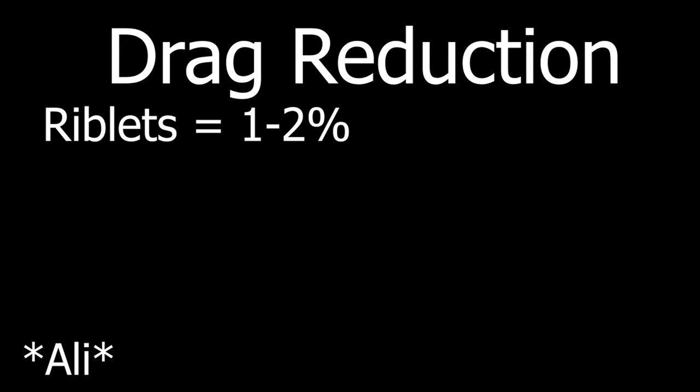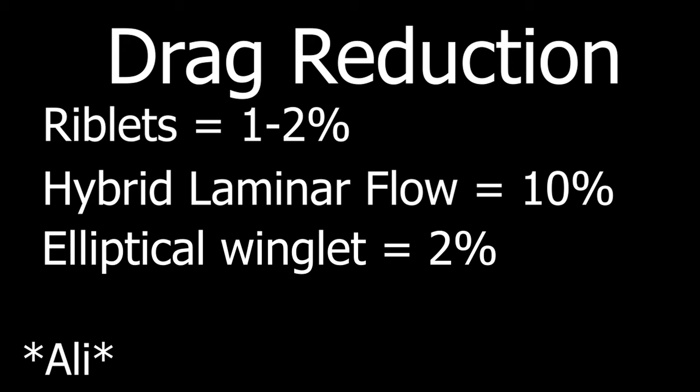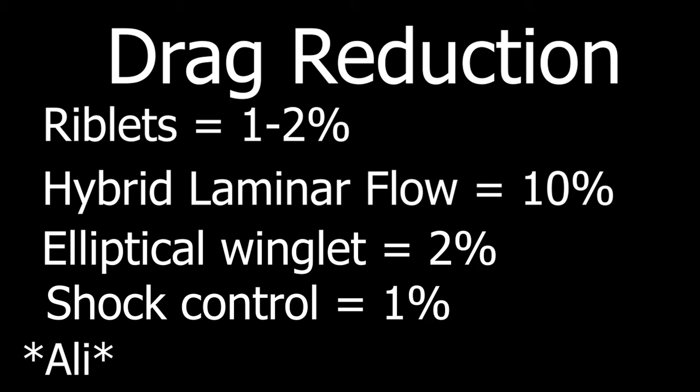High efficiency is achieved by reducing the magnitude of drag, because the less drag there is, the less fuel is needed to fly. Different concepts have been presented as potential ways to reduce drag: turbulent skin friction drag reduction using riblets, hybrid laminar flow technology, innovative wing tip devices such as winglets with an inclination of 60 degrees, and shock control and trailing edge devices to adapt to flight. Despite these inventions, further research must be done on drag reduction, because nowadays it remains the strongest barrier for our aircraft.